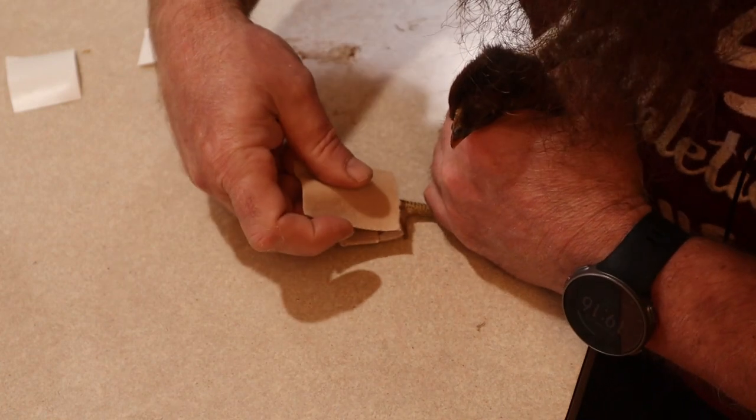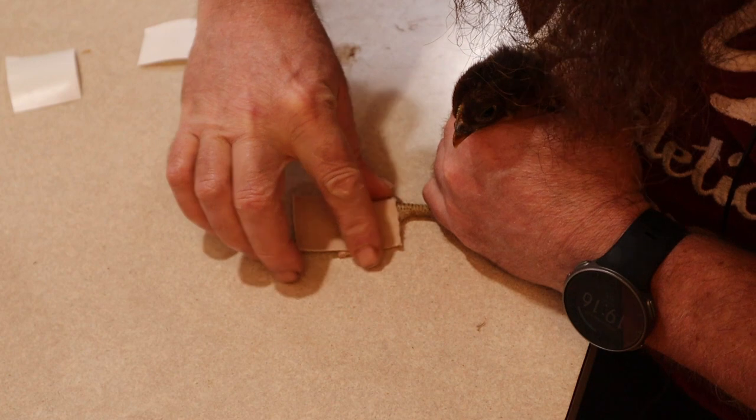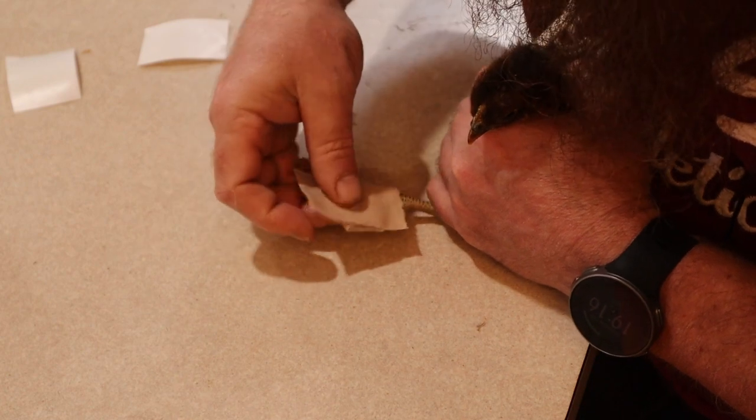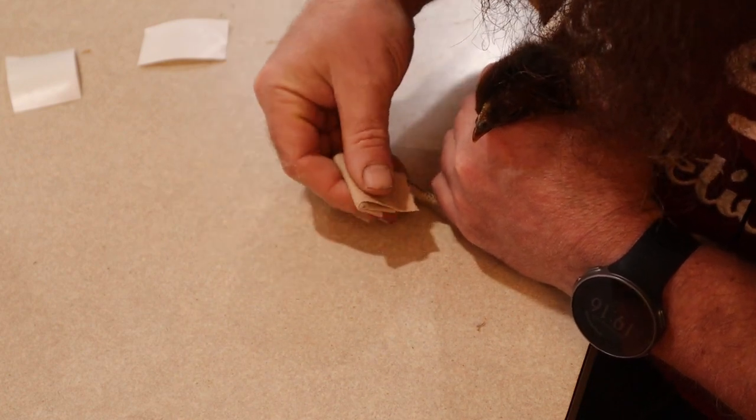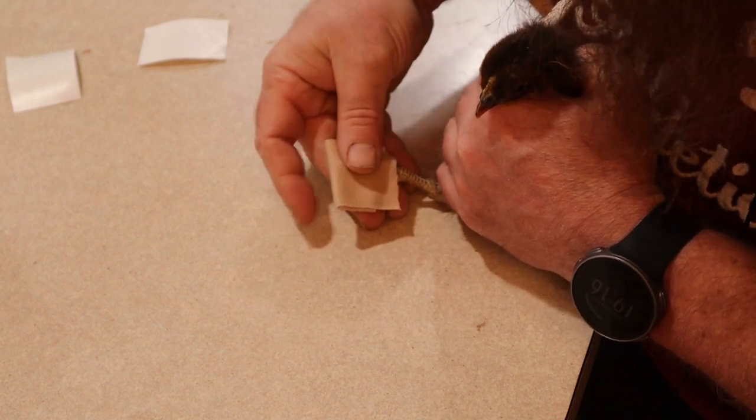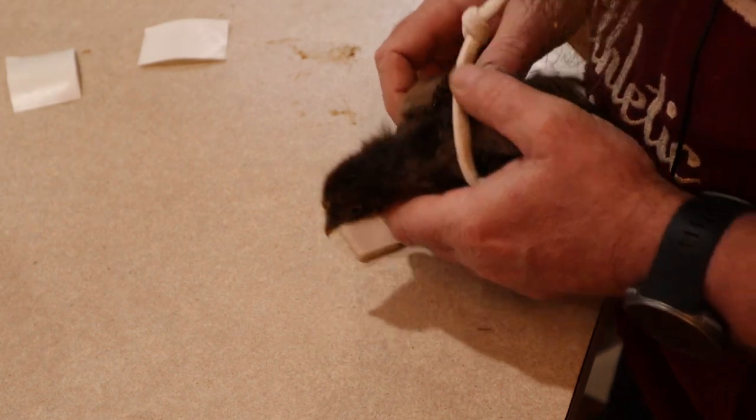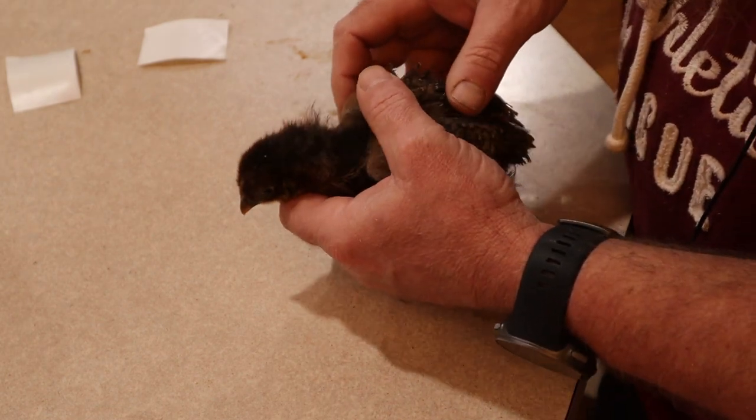You want basically two levels of tape to hold its toes spread out in about a natural position. Then the chicken is going to have to learn how to walk again.